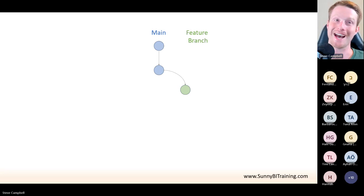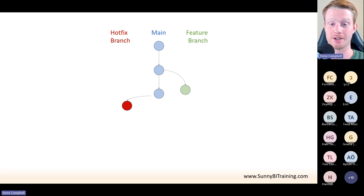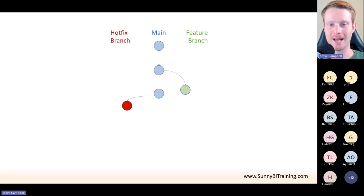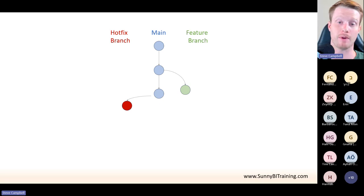We'll take a copy of the main version — that way if we really mess something up when working on it, it doesn't matter because this is just a copy. So we're over here working on this copy. Then a little time after we've started, somebody notices that in our existing report there's actually an error — one of the measures is incorrect and written wrong. No one's noticed it, it's live, end users are using it. So we say we need to fix this ASAP — this is top priority. What we do is go back to the main code and create another branch called a hotfix branch.